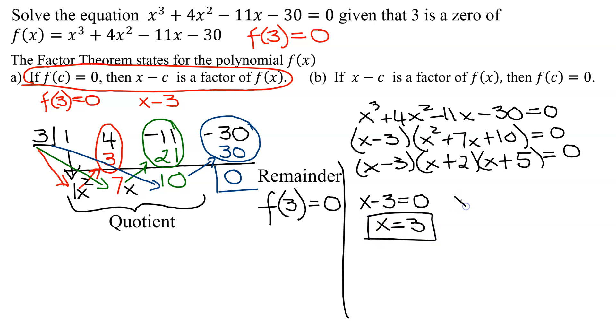Next one, x + 2 = 0. Subtract 2 from both sides, you get x = -2.